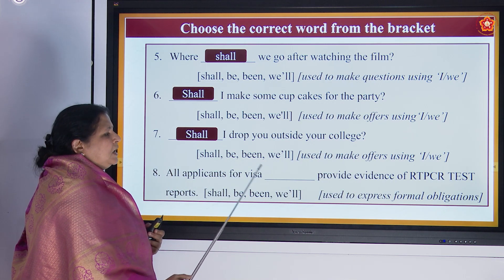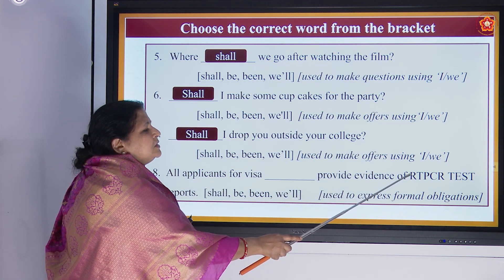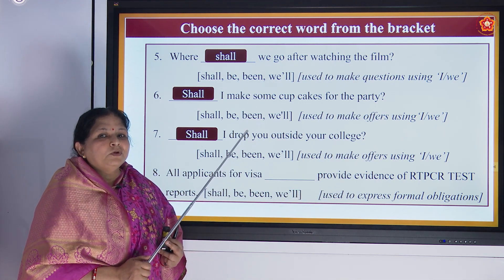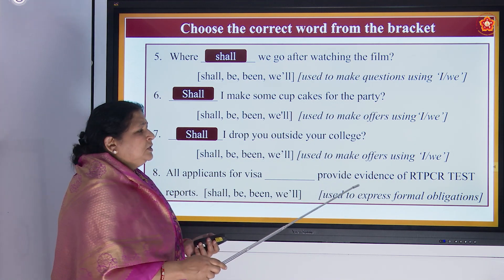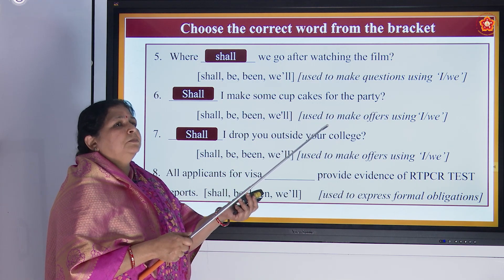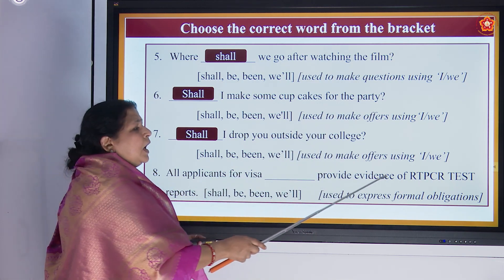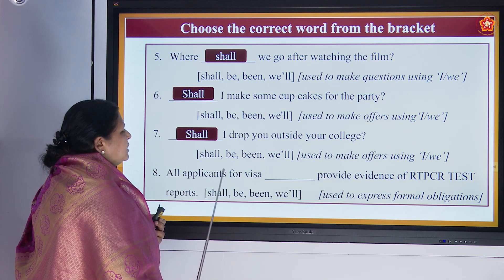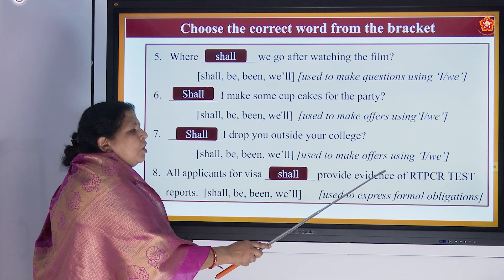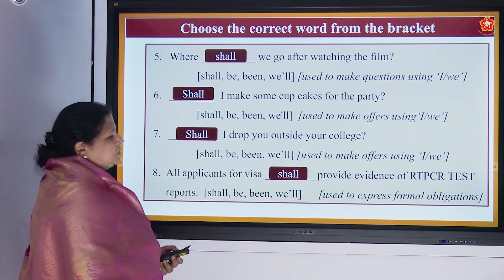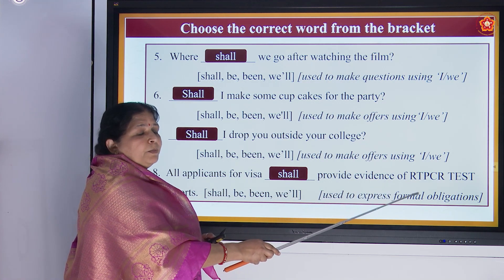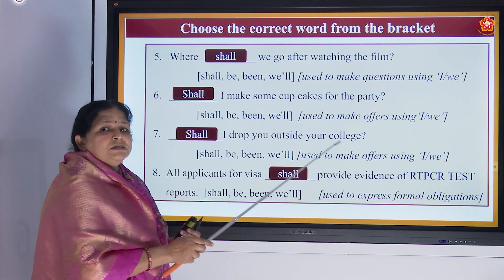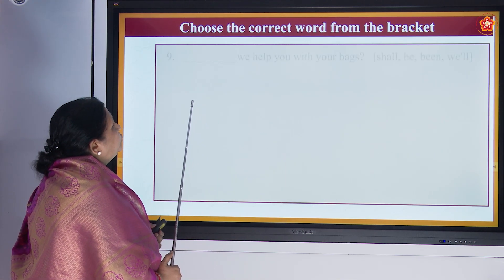'All applicants for visa dash provide evidence of RT-PCR test reports.' RT-PCR tests are very common these days after COVID. Entering a big seminar or conference, we have to have an RT-PCR test done. So: 'All applicants for visa shall provide evidence of RT-PCR test reports.' This is used to express formal obligations — giving the RT-PCR test report is the formal obligation, meaning we have to do that.